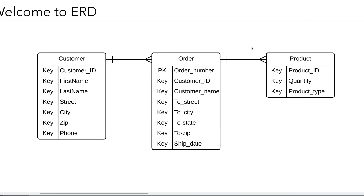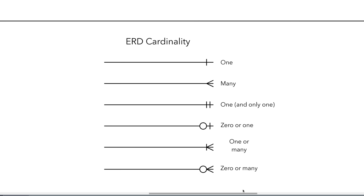Now that we have our relationships in place, you'll see some notation attached to these lines. This is called cardinality, which further defines the relationship in a numerical context — particularly within minimums and maximums. On the right side you can see different types of cardinality used in ER diagrams: 1, many, 1 and only 1, 0 or 1, 1 or many, and 0 or many. Don't be afraid if this isn't making sense quite yet — we're going to walk through some examples that will help you understand this perfectly.